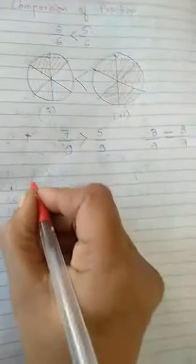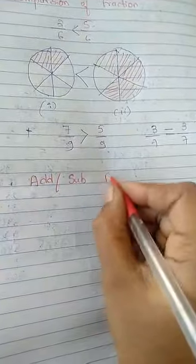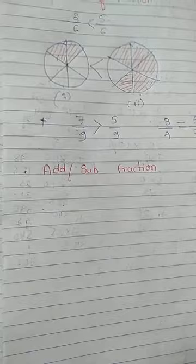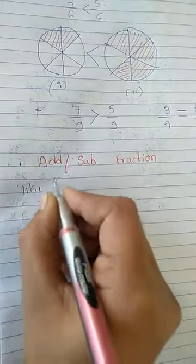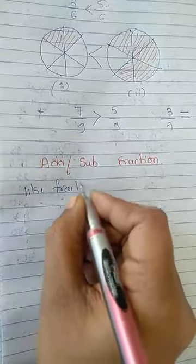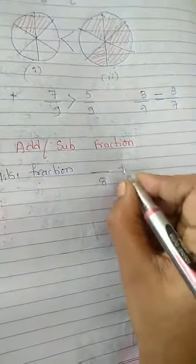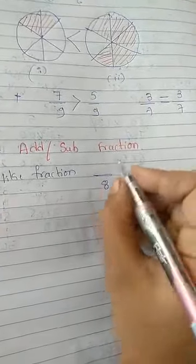Next comes addition and subtraction of fraction. This is very easy. When the denominators are like fraction, like fractions means denominators are same. Like fraction nothing but where the denominators are same. If I take here 8, here also must be 8, then we can say this is the like fraction.